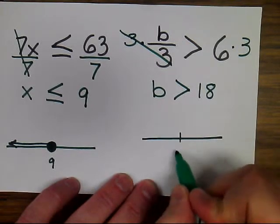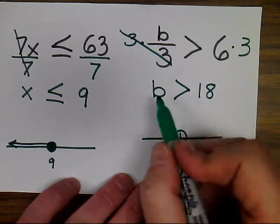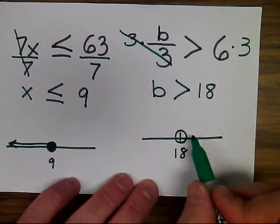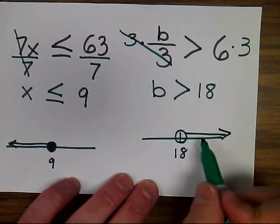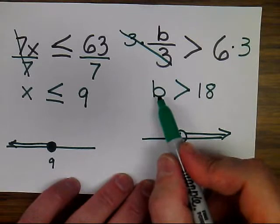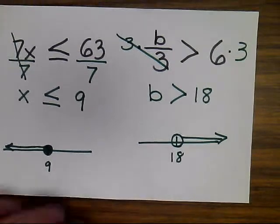And so 6 times 3 is 18. That tells me that b must be greater than 18. So when I make my number line here, I'm not going to make a shaded circle. I'm going to make an unshaded circle because 18 would not make this inequality true. It needs to be a number greater than 18. So I'm going to point an arrow to the right because 20 would be true, 25 would be true, 5,000 would be true. Any of those numbers to the right of 18 would make this a true inequality.